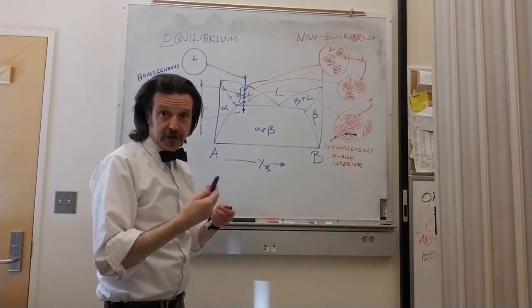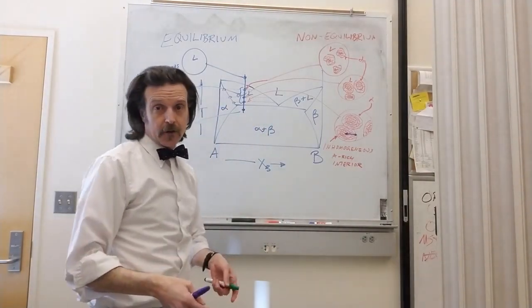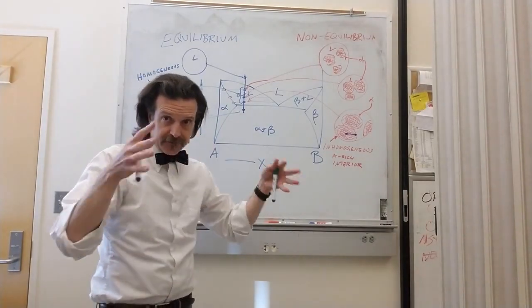This is frequently referred to as coring, where you have the interior core being different from the exterior.